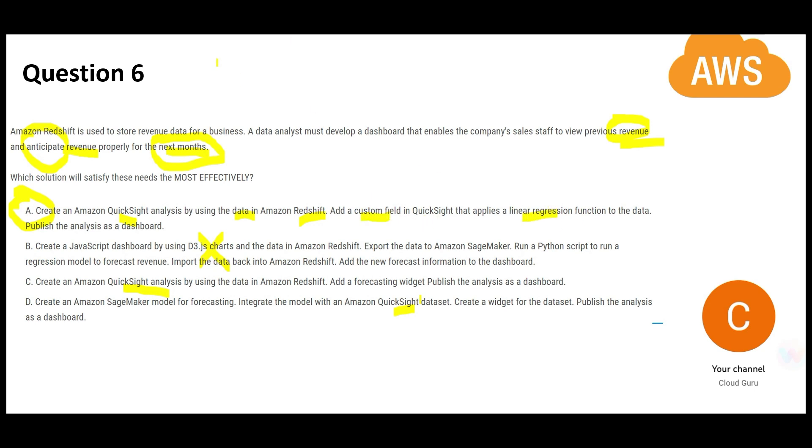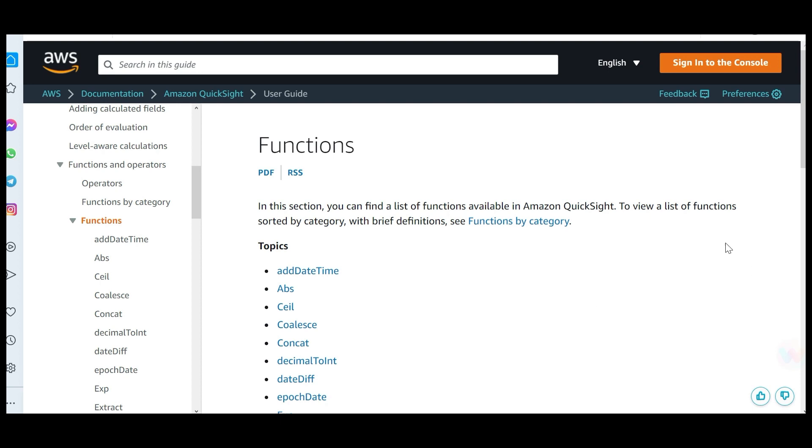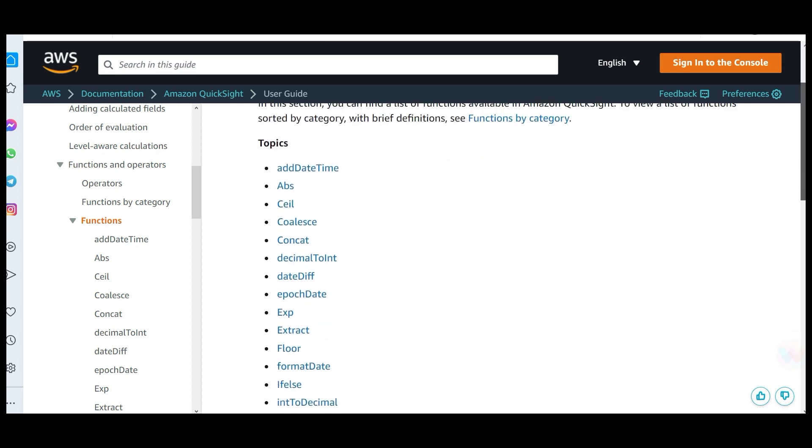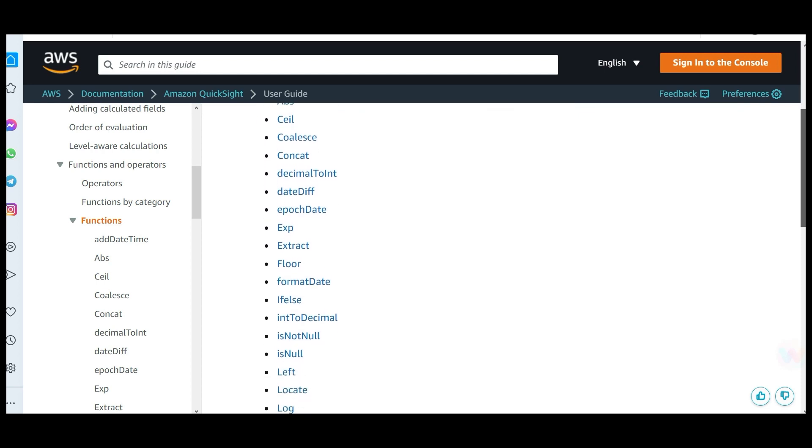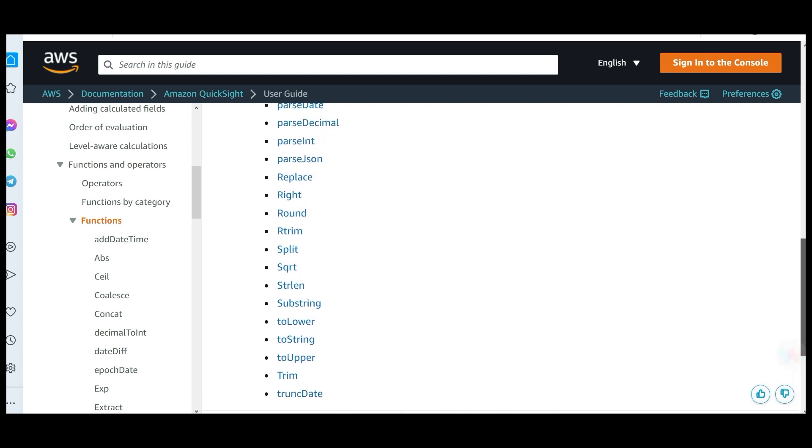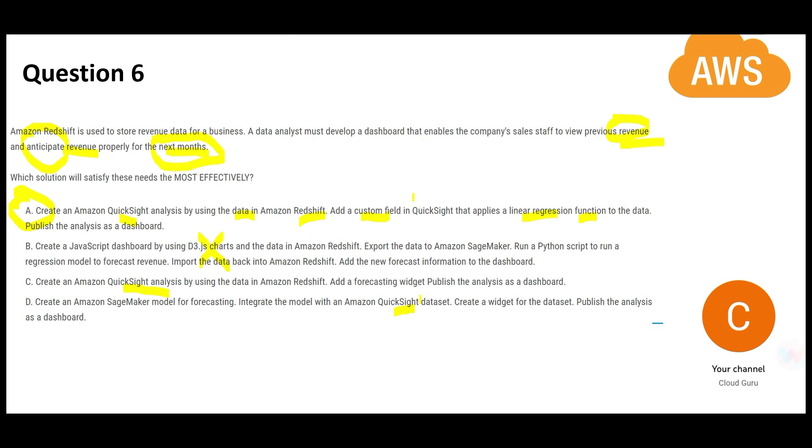The second piece says they will use custom field and apply linear regression to the data. There is no such function. I am displaying the whole list of functions that can be used in QuickSight—there is nothing related to linear regression here. You cannot do it through custom calculated field, so A is wrong.